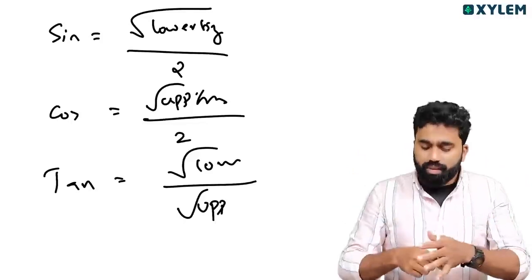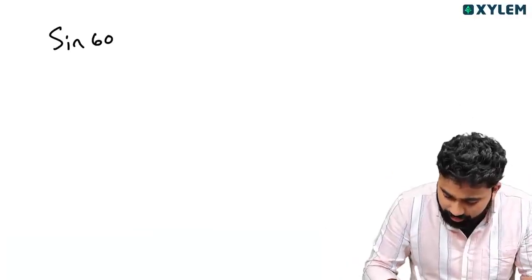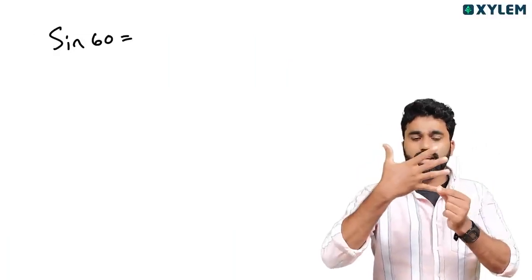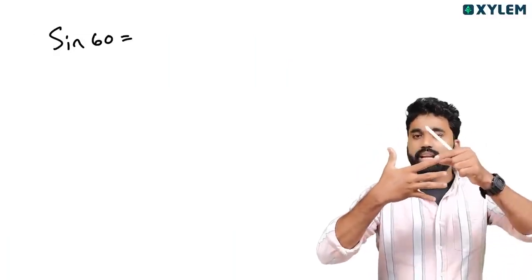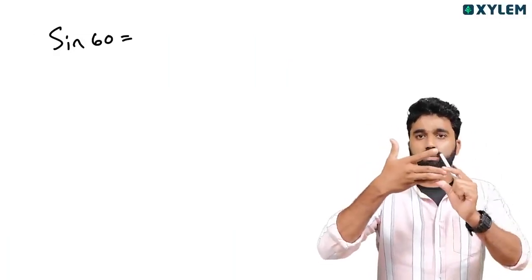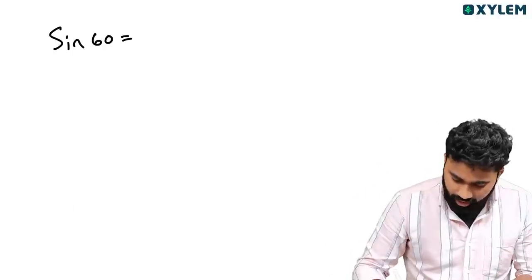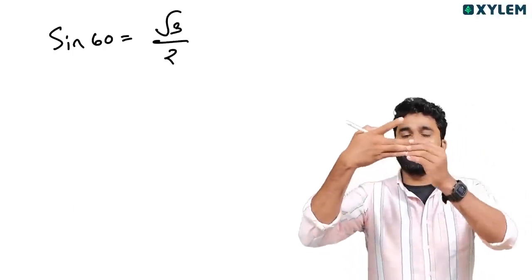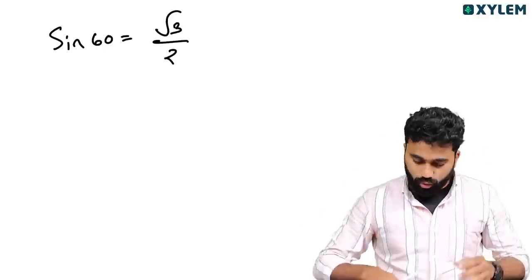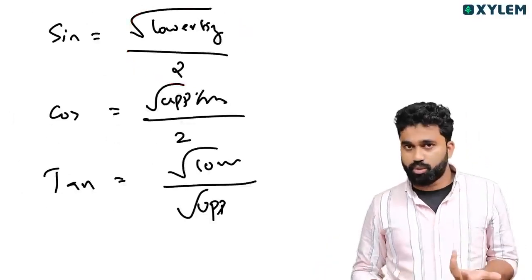Now learn the values. For sin 30, the answer is root 1 over 2, which equals 1/2. For sin 60, it is root 3 divided by 2. For tan 60, it is root 3 divided by root 1, which equals root 3. These come directly from the lower fingers divided by 2 formula.